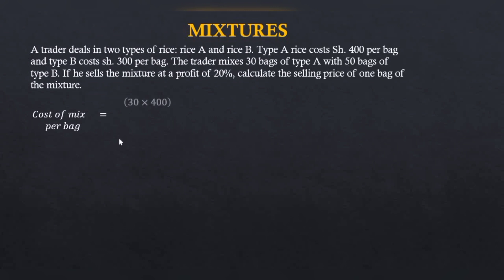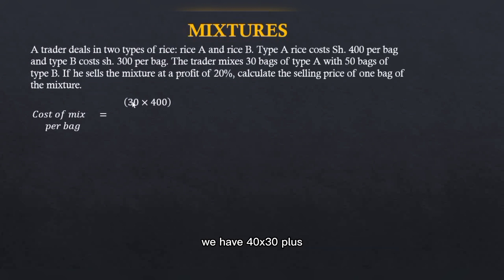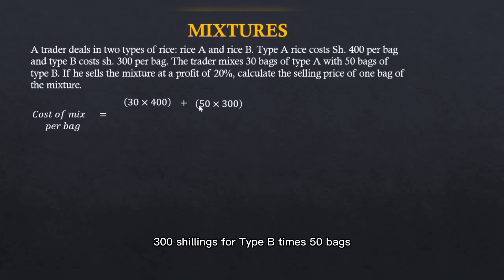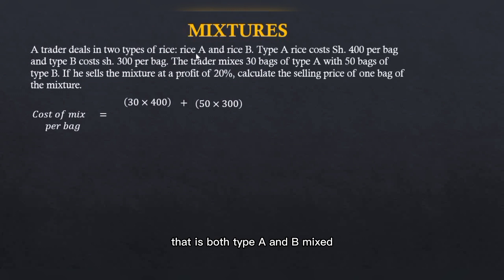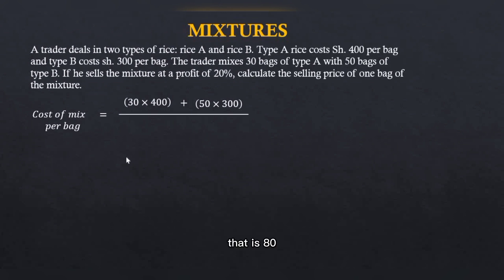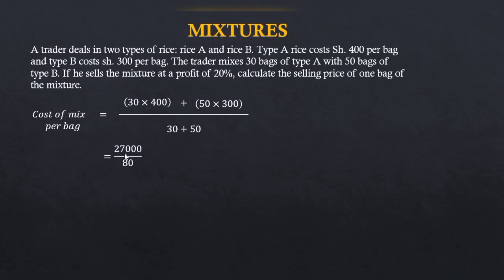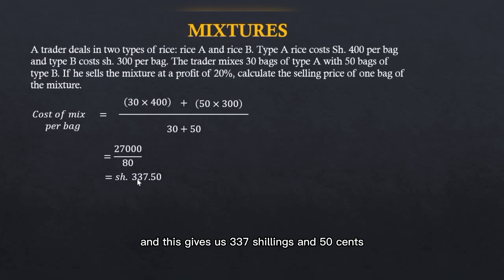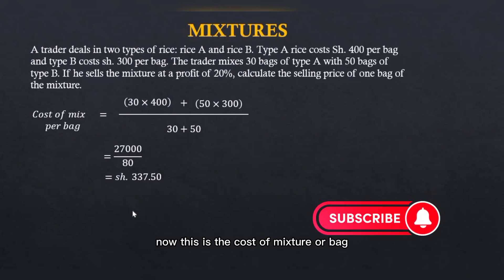That is 400 shillings per bag for type A, and there are 30 bags, so we have 400 times 30, plus 300 shillings for type B times 50 bags. This forms the total cost of the mixture — both type A and B mixed. Because we are looking for the cost of mixture per bag, we divide by the total number of bags, that is 80 — so 30 plus 50 bags. This simplifies to 27,000 for the numerator and 80 for the denominator, giving us 337 shillings and 50 cents. This is the cost of mixture per bag.